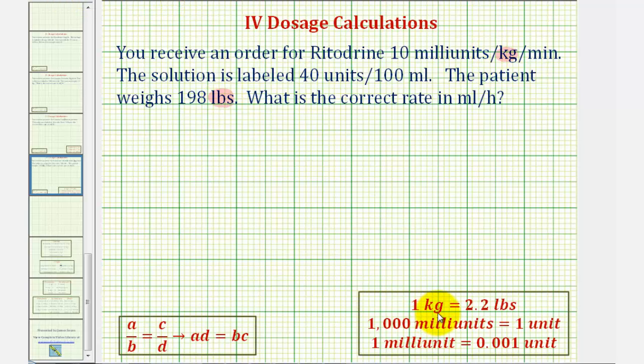Looking at our conversions below, notice that one kilogram is equal to 2.2 pounds. So we can say one kilogram is to 2.2 pounds as an unknown number of kilograms, which we'll call x kilograms, to the weight of 198 pounds.